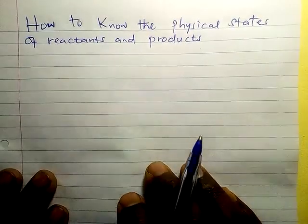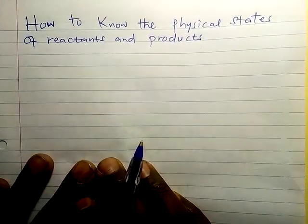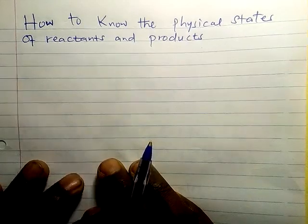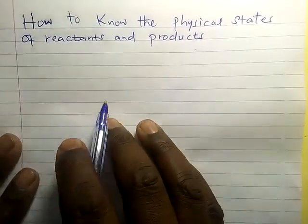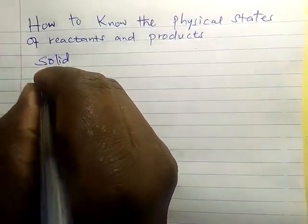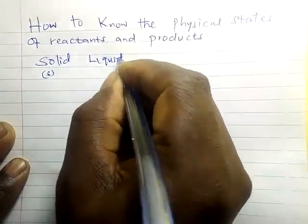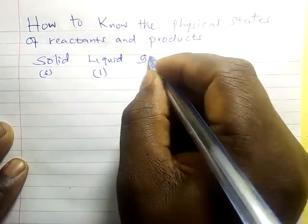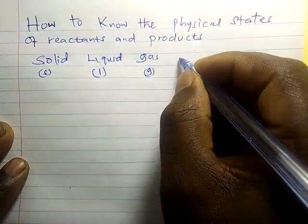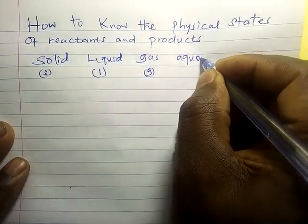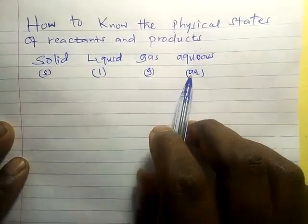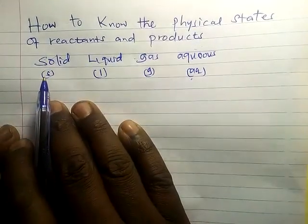Welcome. Let us look at how to identify the physical states of reactants and products. The physical states — we have four of them: we have the solid (S), liquid (L), gas (G), and then aqueous (AQ). So these are the four physical states that we have.